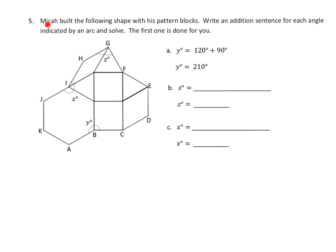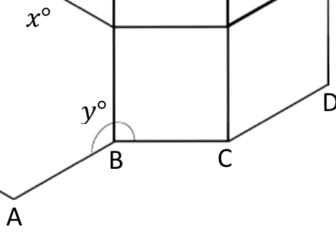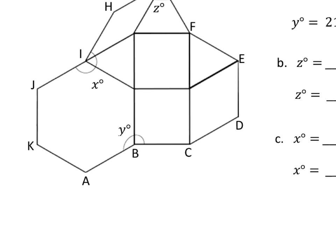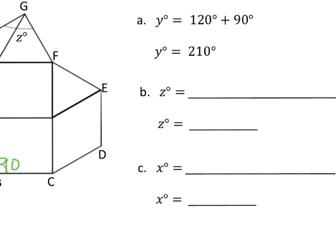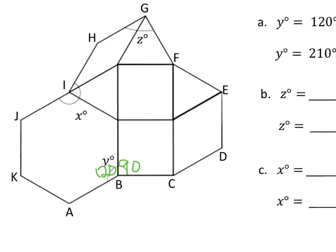In the last slide, we have Micah, who built a shape using pattern blocks. We need to write an addition sentence for each angle indicated by an arc and solve it. The first one is done for us: Y is right here, and from our previous experience we can see that this is 120 degrees and this is 90 degrees. So Y is equal to 120 plus 90, and that's 210 degrees.